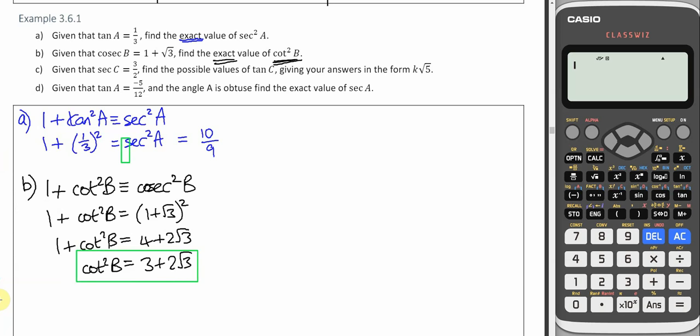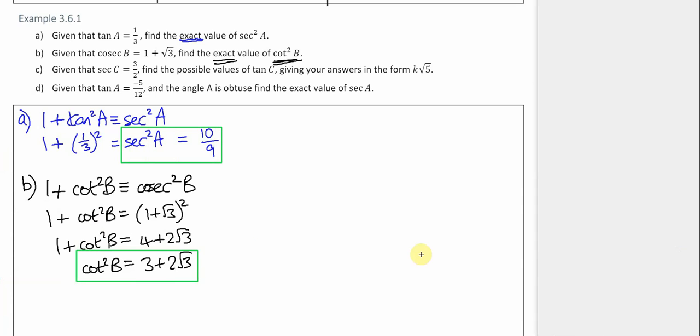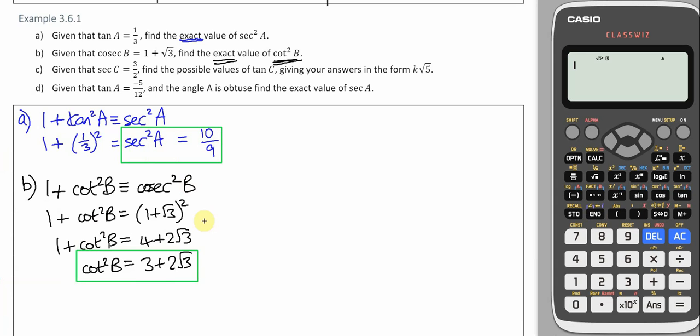And the answer to part A was sec squared A was 10 over 9. Now I've said a couple of times that we don't want to find A. We don't want to try and find B. I'll just show you what it would be like on the calculator.